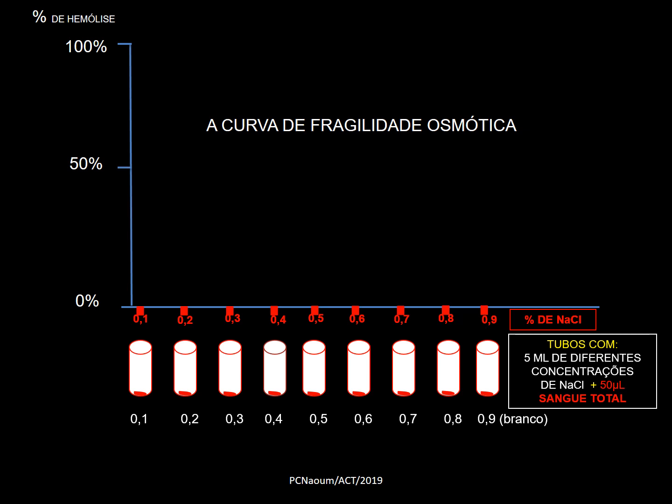Depois de colocar o sangue em cada um dos tubos e homogeneizar por inversão 3 vezes cada tubo, deixa-se em repouso entre 10 e 20 minutos. Feito esse repouso, faz-se uma centrifugação lenta, em torno de 1.800 rotações por minuto por 10 minutos.